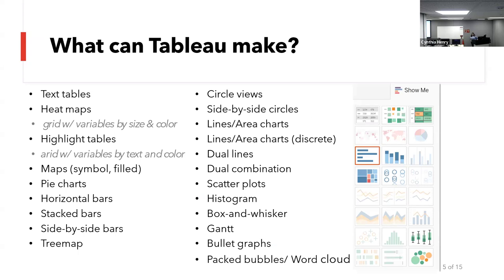So what can Tableau make? Tableau can make a lot of things. Your normal pie charts, maps, bar charts, stacked bar charts — all that kind of stuff is available. Some lesser-known chart types include a tree map, which I wasn't familiar with until I started working in Tableau, and packed bubble charts. You can even turn packed bubbles into a word cloud.